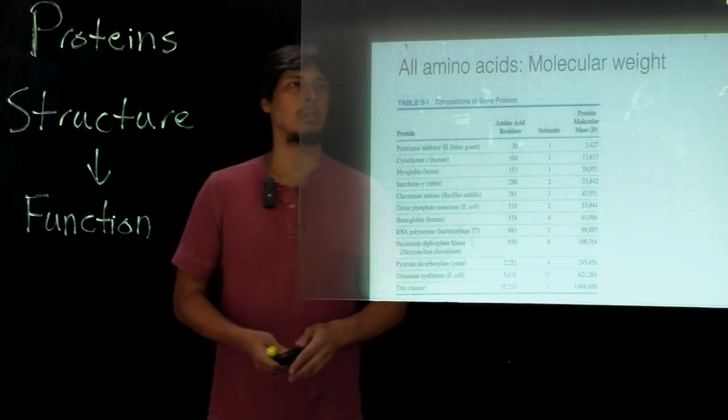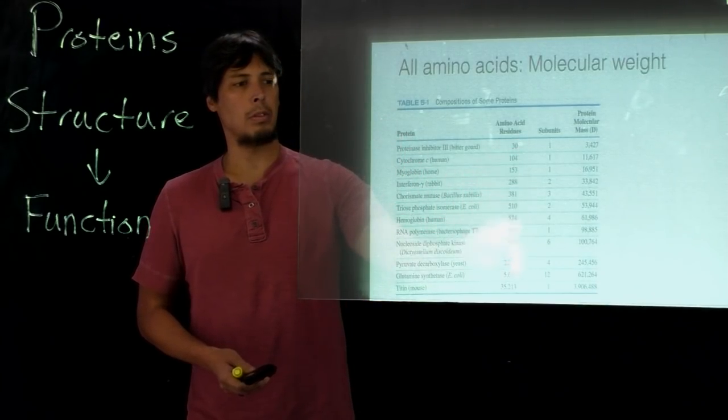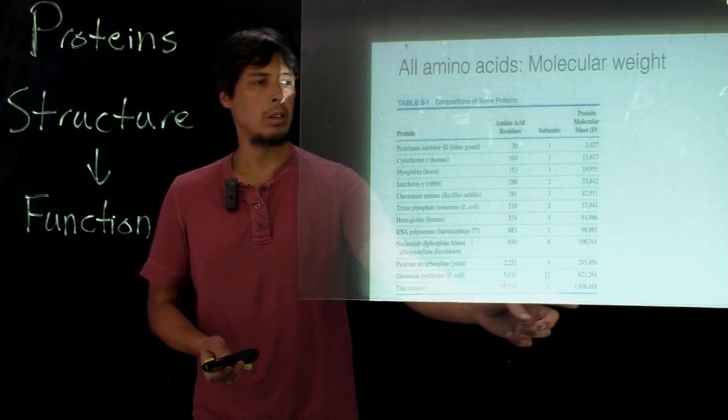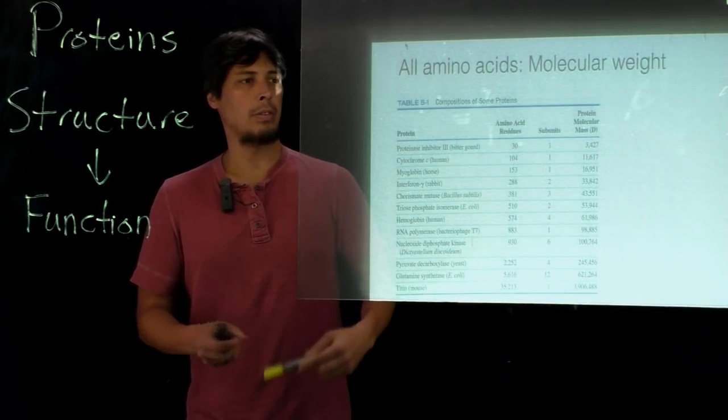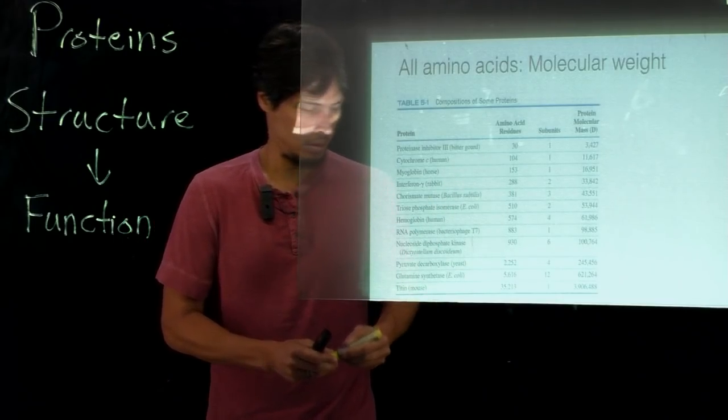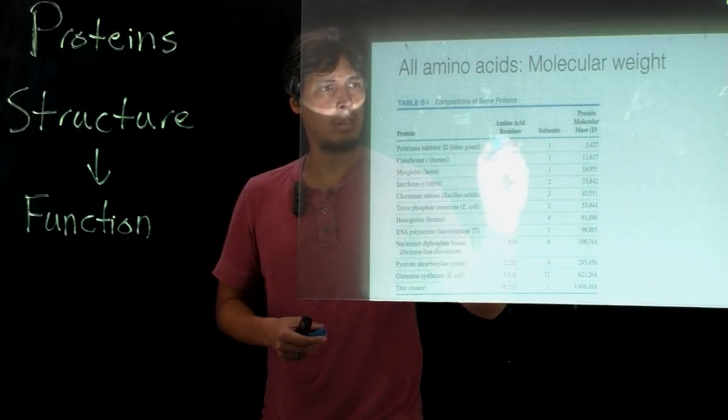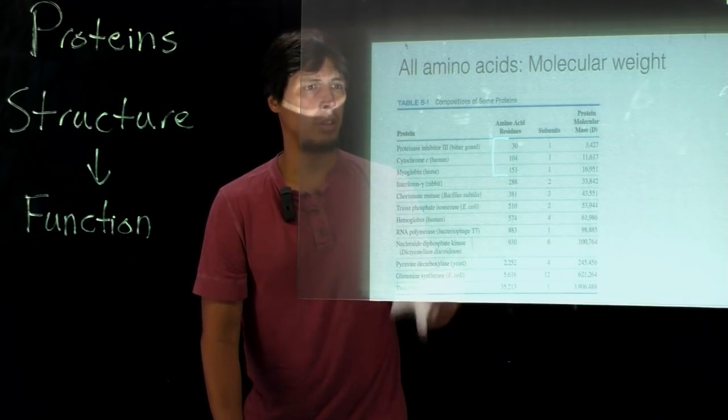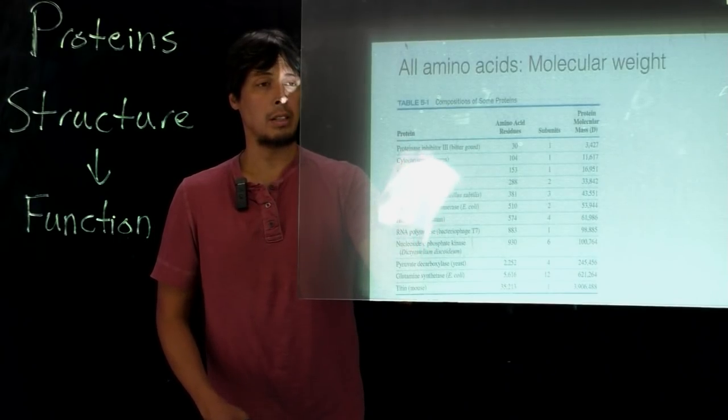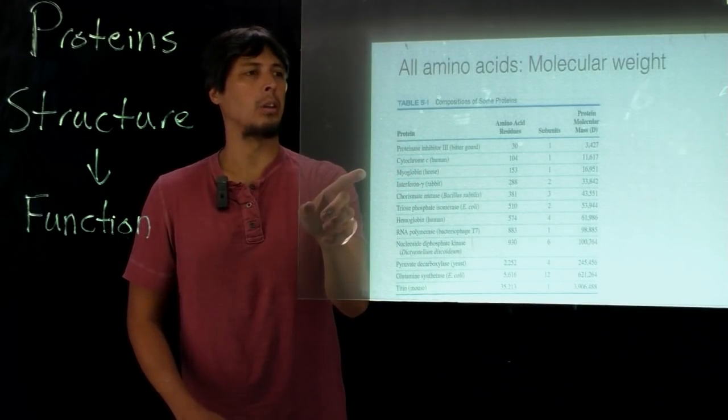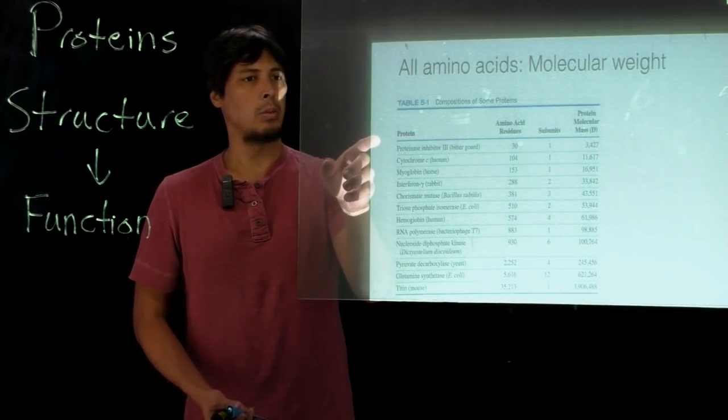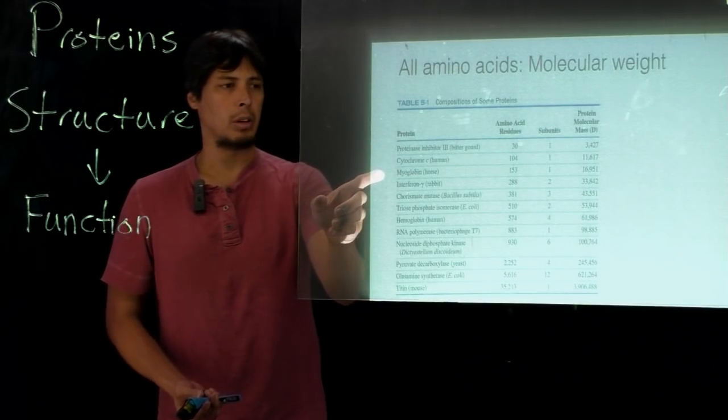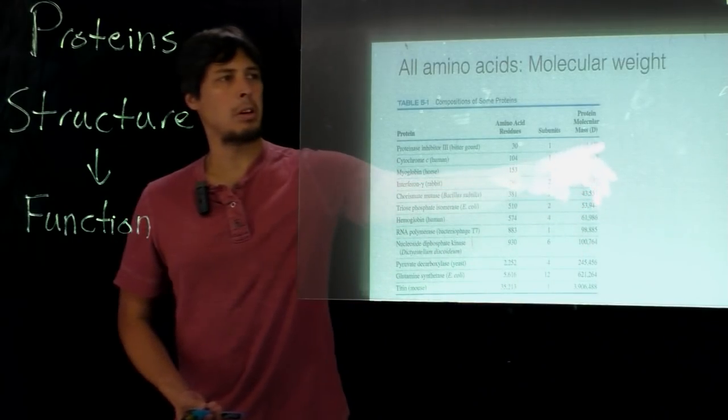As you would expect, these are several proteins with the number of amino acid residues that they have in their amino acid sequence and their molecular weights. If we just look at single subunit proteins, the first three - proteinase inhibitor 3, cytochrome C, and myoglobin - all have one subunit. The first one has 30 amino acid residues, the second 104, the third 153, and you see the corresponding molecular masses go up from about 3.4 kilodaltons or 3,400 daltons to almost 17,000 daltons.